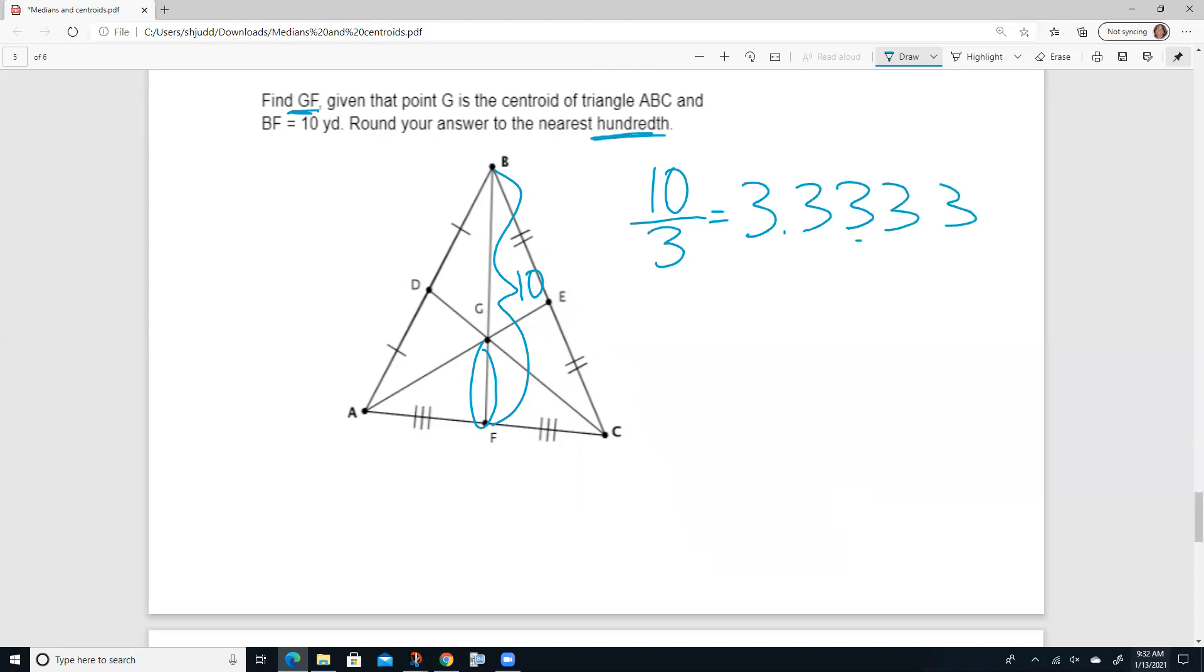And we want to round to the nearest hundredth. So our hundredths place is right here. And looking at our thousandths place, will the three make the three round up or stay the same? And it'll make it stay the same. So our answer is 3.33.